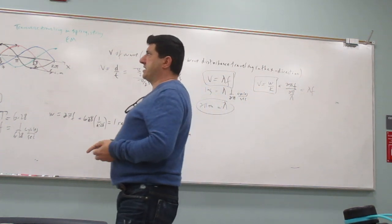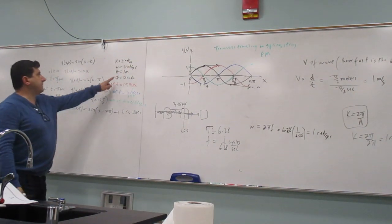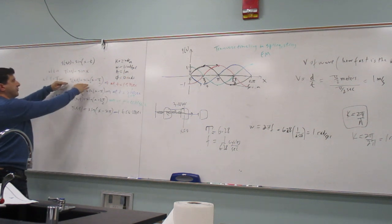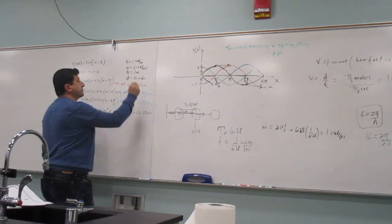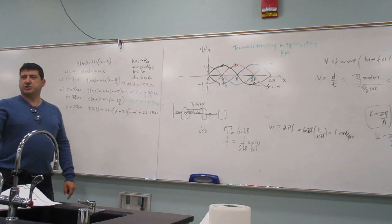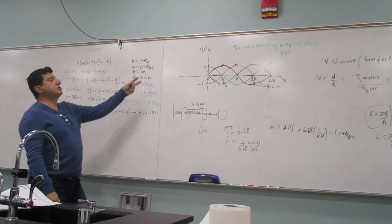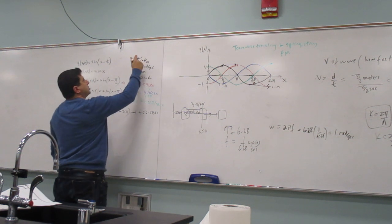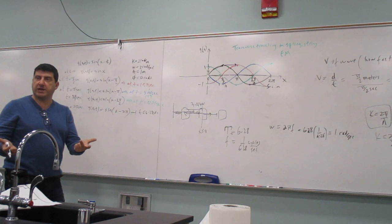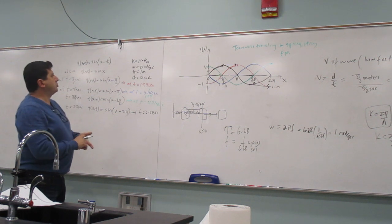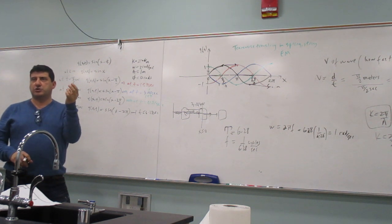You can do this exercise changing k to 2 radians per meter, keeping omega the same; or keeping k at 1 and changing omega to 2 radians per second; or doubling both. If you double both k and omega, what happens to the wave? Should the velocity change, the frequency change, the wavelength change, or should nothing change?